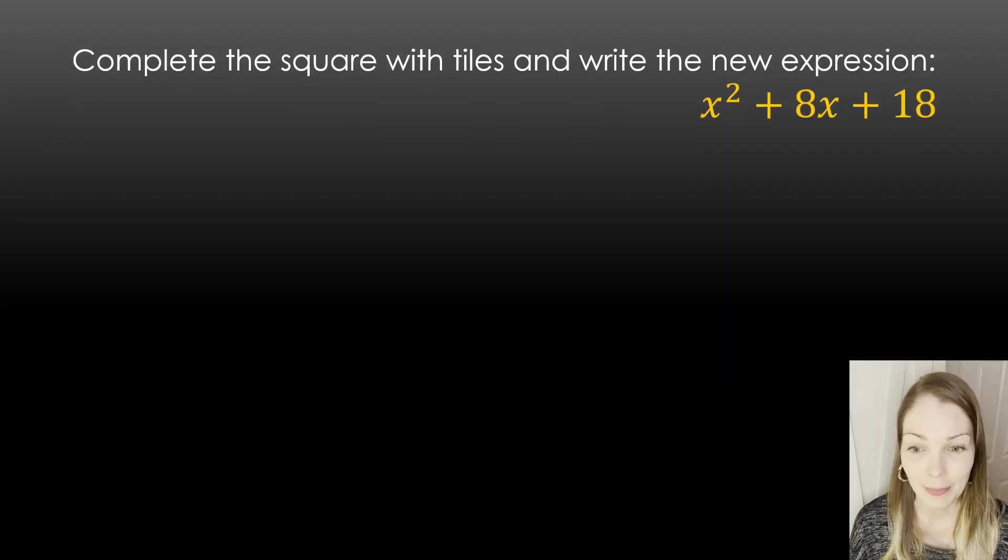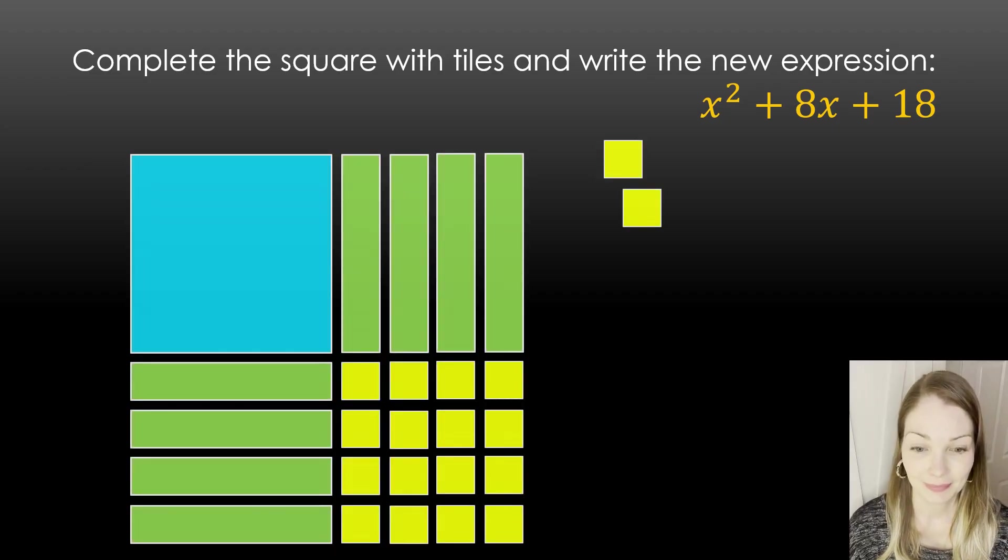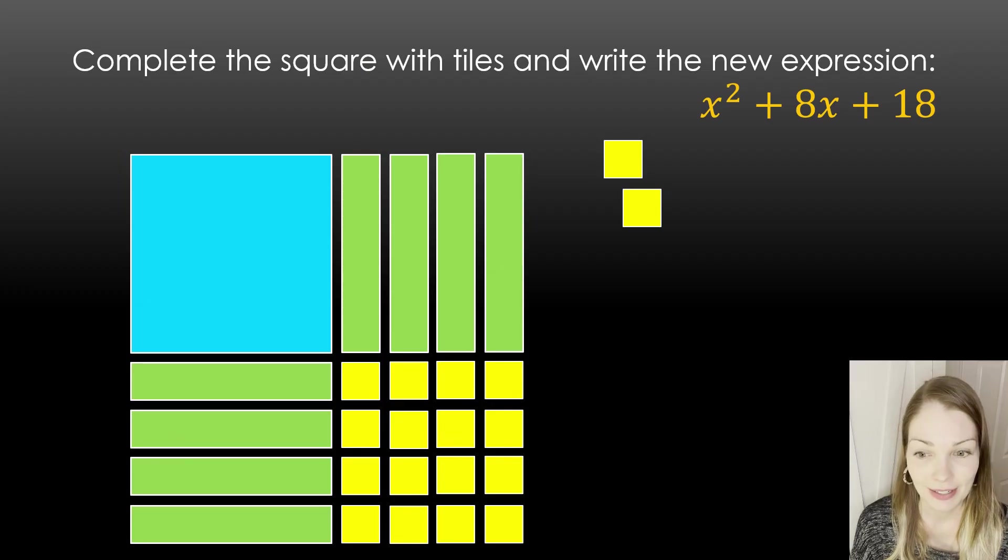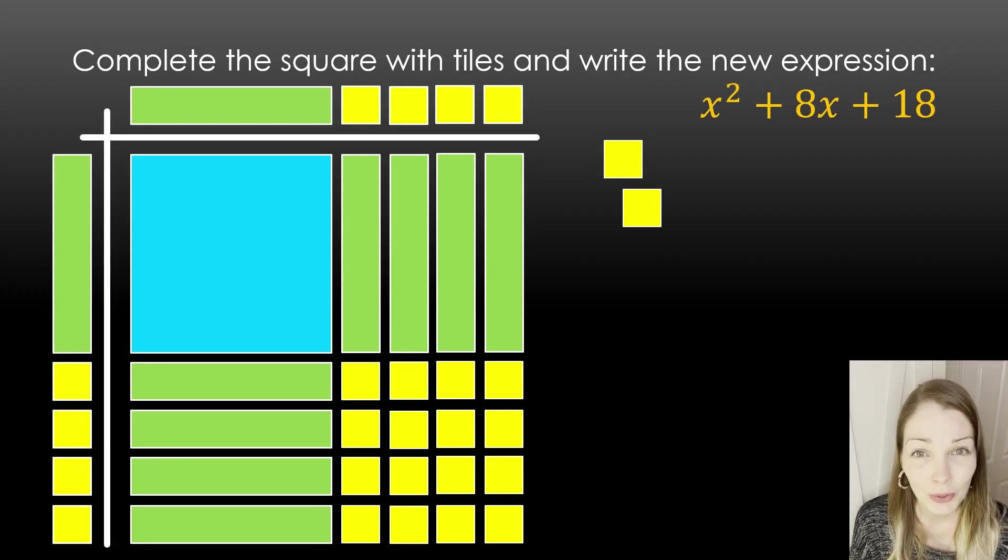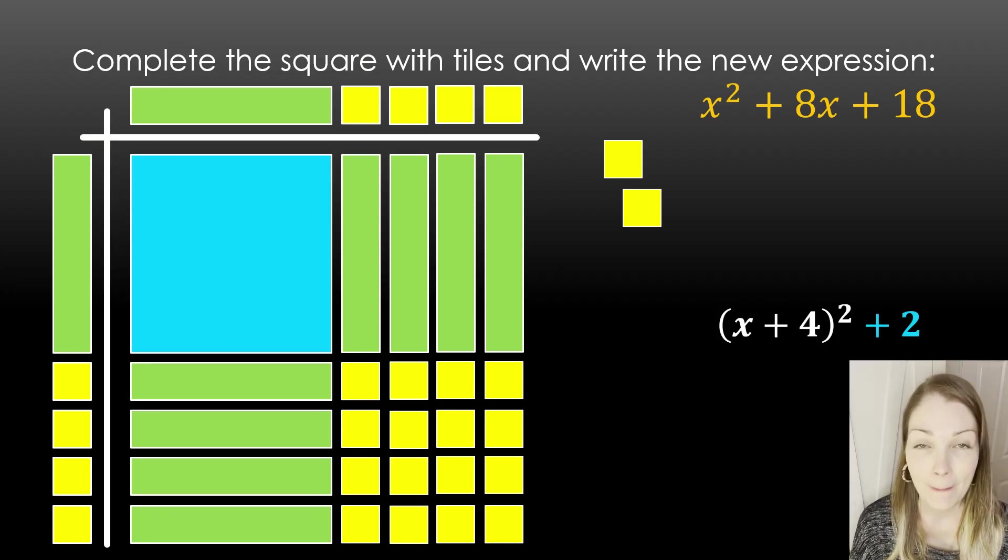All right, try this one. x squared plus 8x plus 18. Try to make a square and then see if you need to complete the square. All right, so here's my arrangement. I made my square and I had two extra tiles this time. So this time I didn't need to add more. I had two that won't fit in my square.